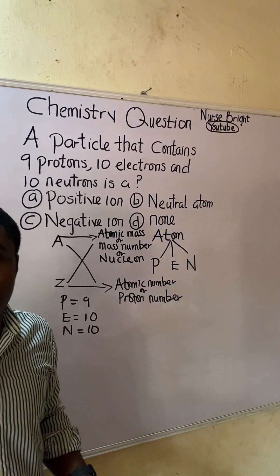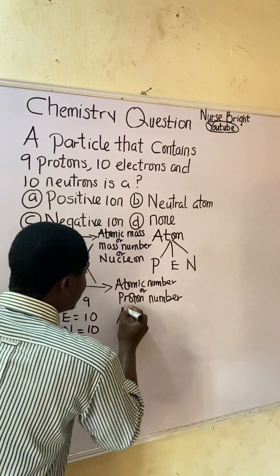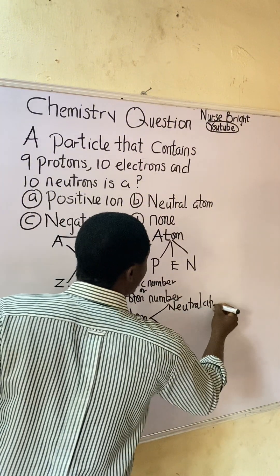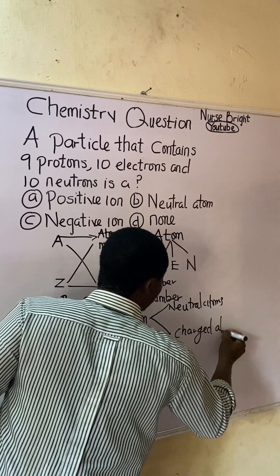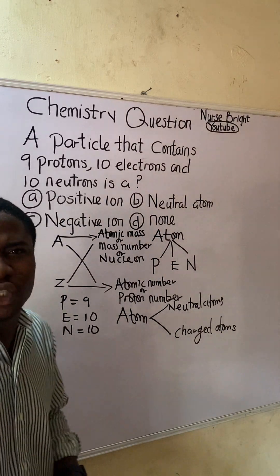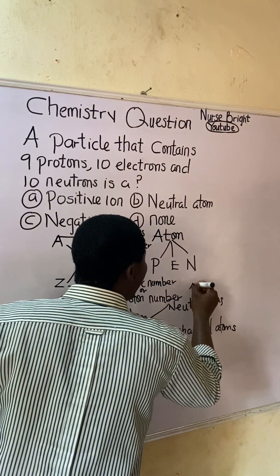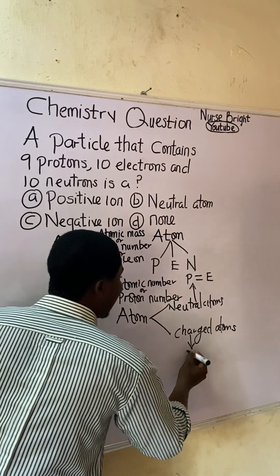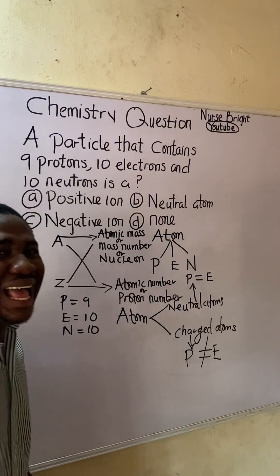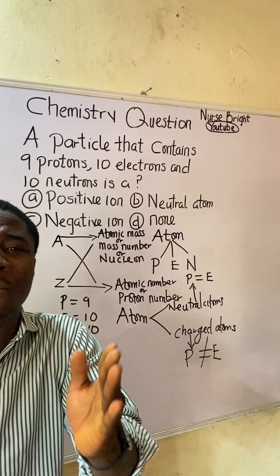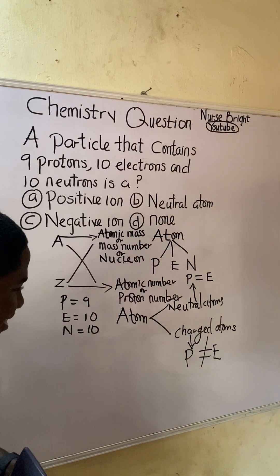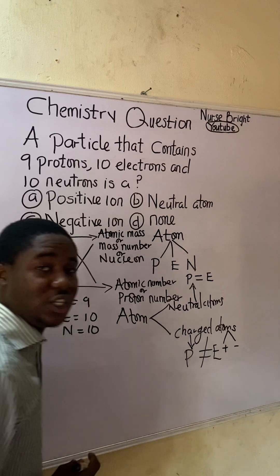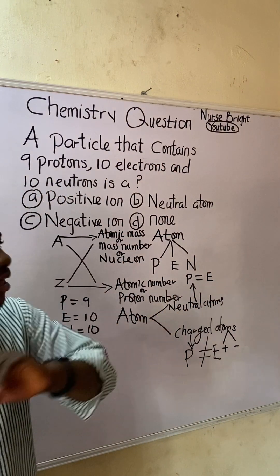Here is a simple trick: atoms can be of two kinds — neutral atoms and charged atoms. For a neutral atom, the proton number is always equal to the electron number. For a charged atom, the proton number is NOT equal to the electron number. A charged atom can be either positively charged or negatively charged.